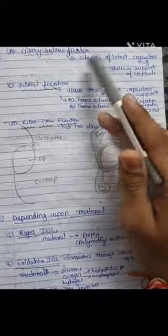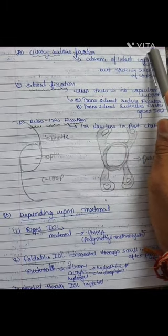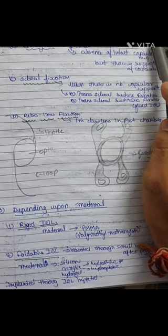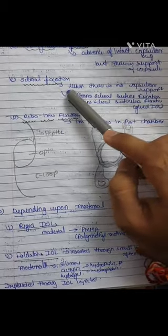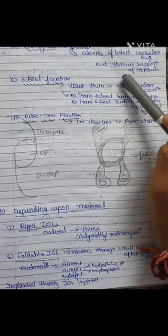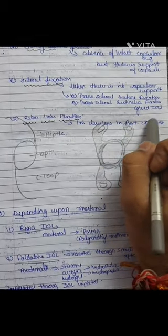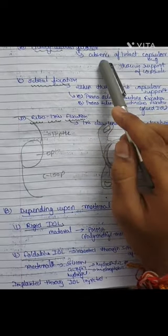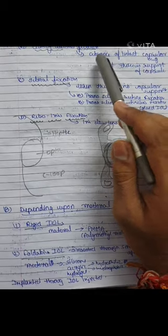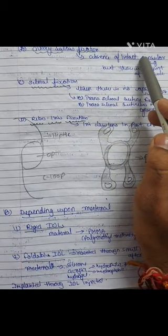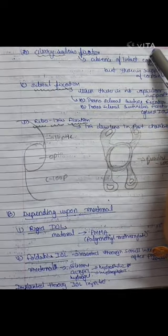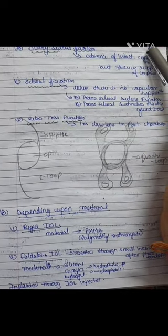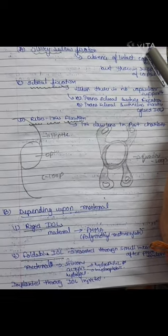The third method is scleral fixation, used when there is no capsular support at all — no intact capsular bag and no capsule. We can do either trans-scleral suture fixation or trans-scleral sutureless fixation. Remember: iris claw lenses when the capsular bag is not intact, and scleral fixation when the capsular bag is entirely absent.